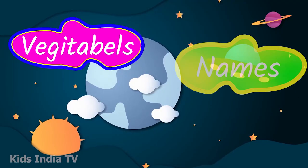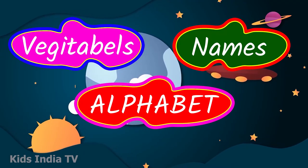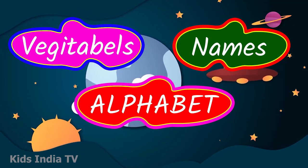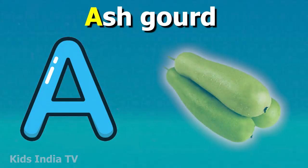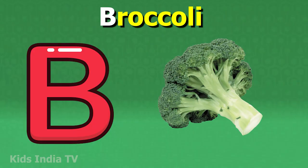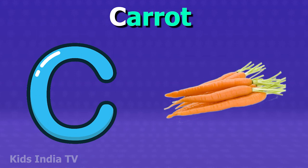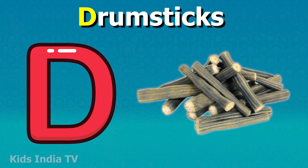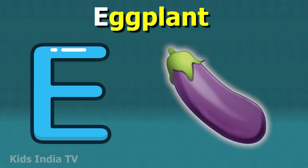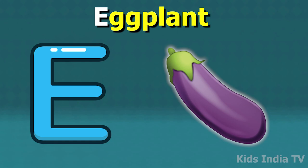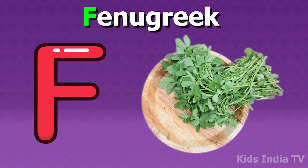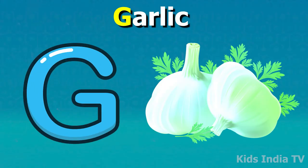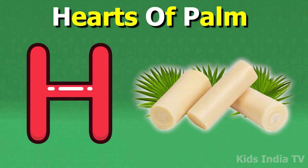Vegetable names according to alphabets. A for Artichoke, B for Broccoli, C for Carrot, D for Drumstick, E for Eggplant, F for Fenugreek, G for Garlic, H for Heart of Palm.